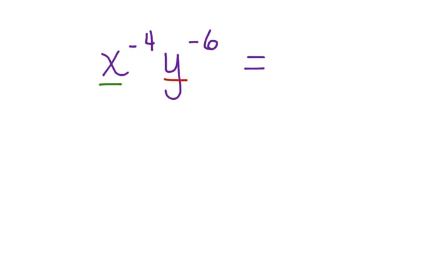Let's start with the x. x to the negative 4th becomes 1 over x to the 4th times y to the negative 6th,